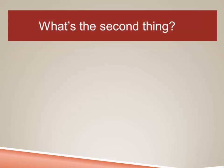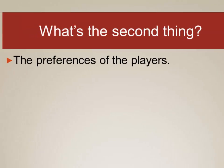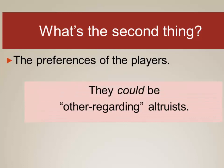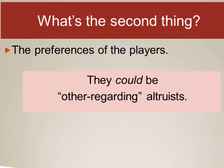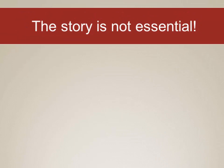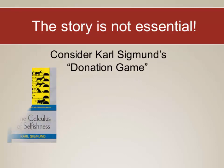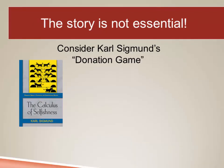The second thing that defines the Prisoner's Dilemma is the preferences of the players. We could modify the game and say the players are other-regarding altruists — meaning rather than maximizing their own welfare, they do whatever benefits the other player more than themselves. The story about the prisoners is not essential to this. We've discussed the Prisoner's Dilemma both as a card game and as the classic story, but to illustrate this point we'll look at the donation game developed by mathematician Karl Sigmund, discussed in his book The Calculus of Selfishness.